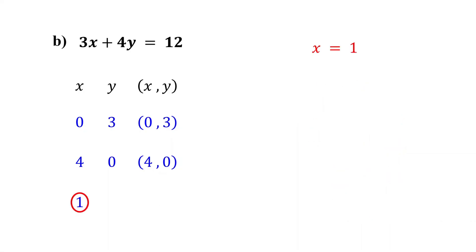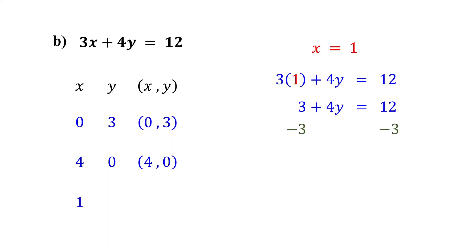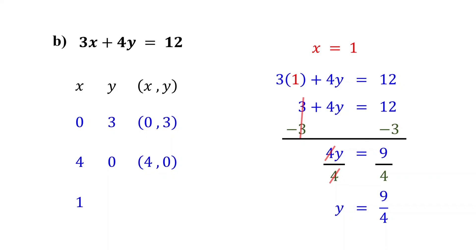Next, we have x equals 1. Substitute 1 for x and solve for y. 3 times 1 is 3. Then, subtract 3 from both sides; these cancel out, and 12 minus 3 equals 9. Now, if you divide both sides by 4, you find that y equals 9 fourths. So, when x equals 1, y equals 9 fourths. Therefore, (1, 9/4) is another solution to the equation.